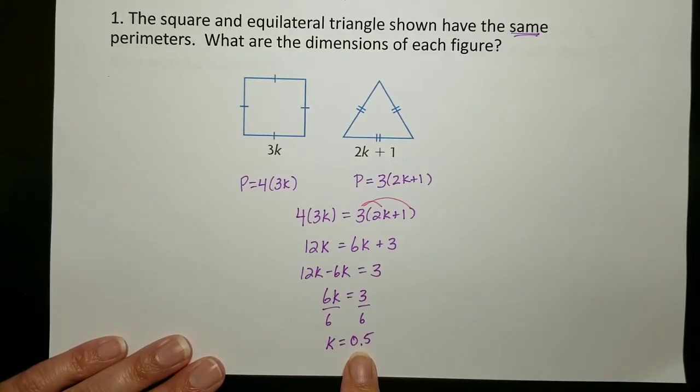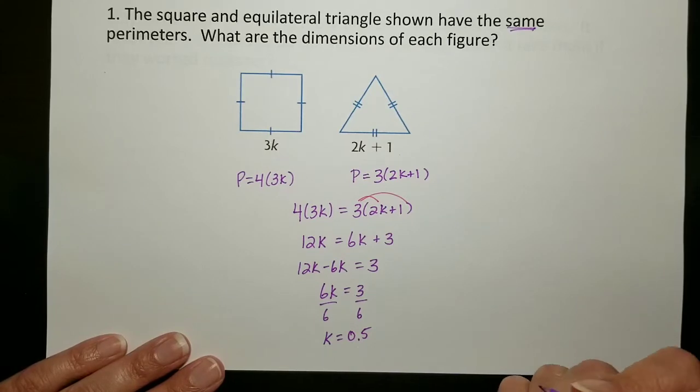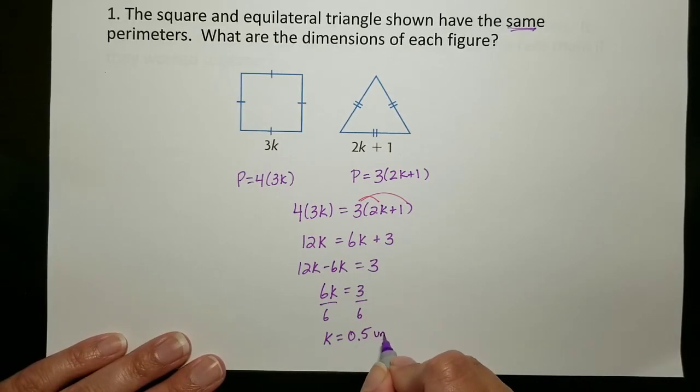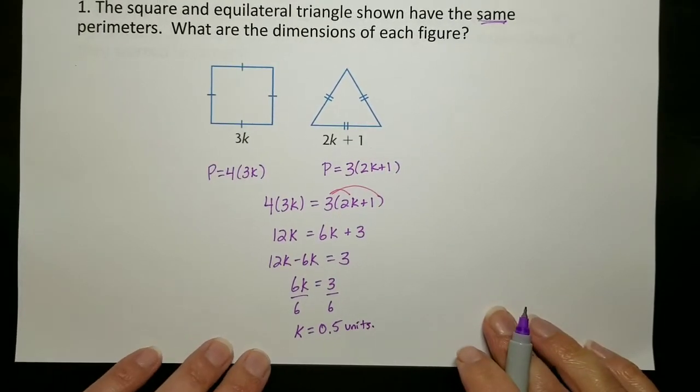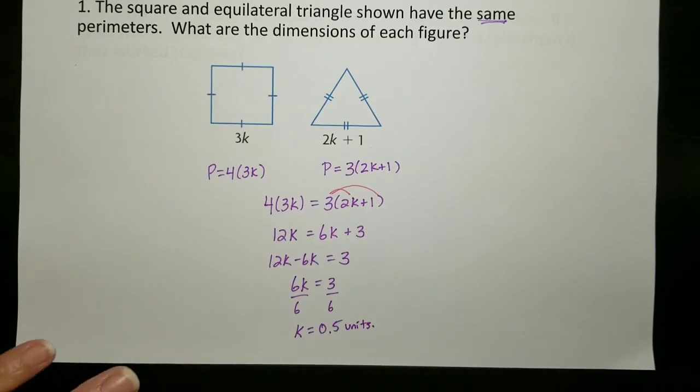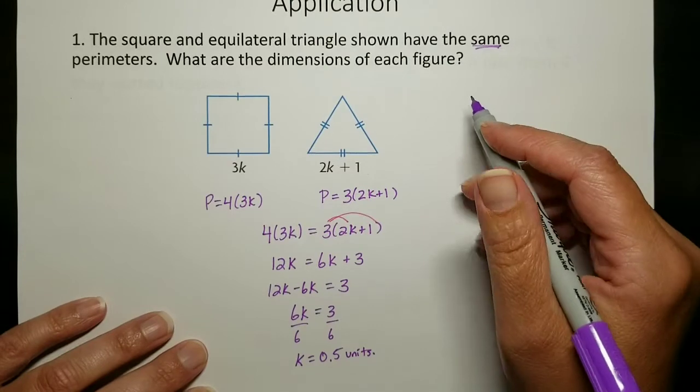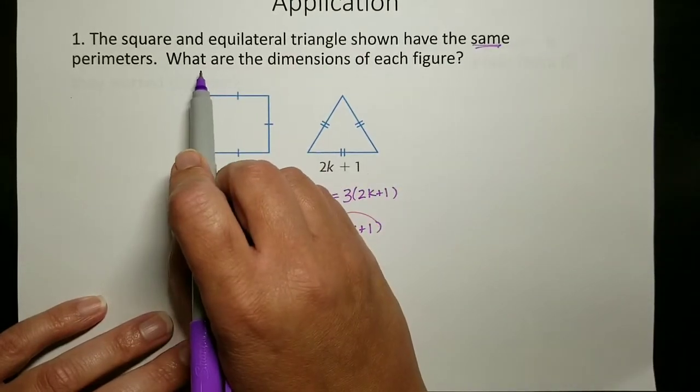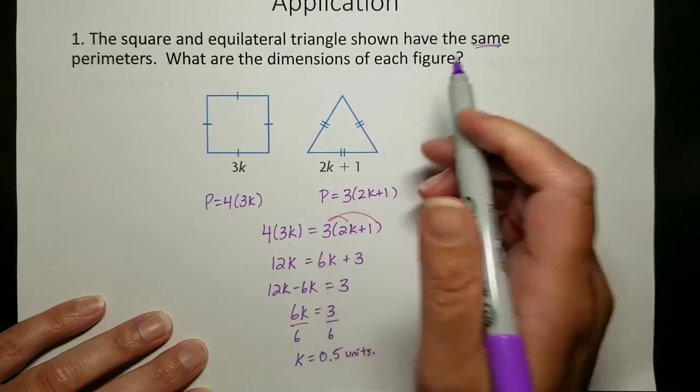12k minus 6k is 6k equals 3, and then divide both sides by 6. Now this is a word problem, so here I'm going to make this 0.5. It doesn't say centimeters or meters, so it's just 0.5 units. If it's a word problem, I would go into decimals. So that's not the end. k equals 0.5 is not the answer to the question because we have to look at what it is asking. It says what are the dimensions of each figure.